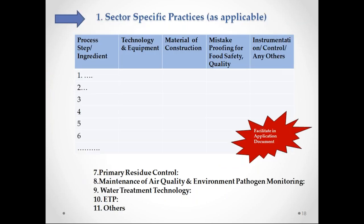This is the sector-specific practices format. In the process step, list all steps — process one, two, three, four — do not miss a step. For each step, the company should identify the technology and equipment used, the material of construction, mistake proofing (such as photo sensors or interlocks), and any instrumentation, process controls, or auto ejection systems. If this is already filled in a table format, it is easier for you to understand their sector-specific practices, and when you verify it quickly on site, you can copy-paste this information into your Section C — the sector-specific format.